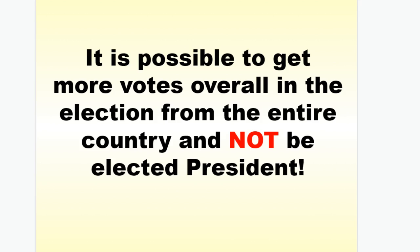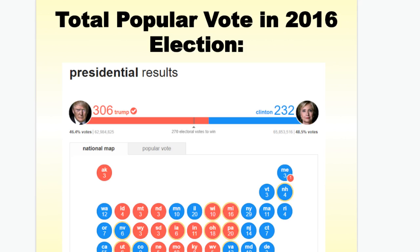It's possible to get more votes overall from the entire country and still not be elected president. You saw this in 2016: Donald Trump won 306 electoral votes to Hillary Clinton's 232. He received 62.9 million votes; she received 65.8 million votes — about 3 million more — but Donald Trump carried the electoral vote, which is how you win the election in the United States.